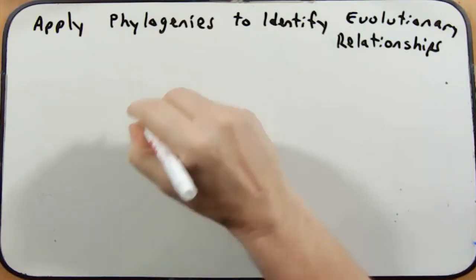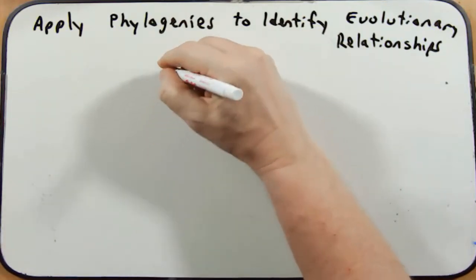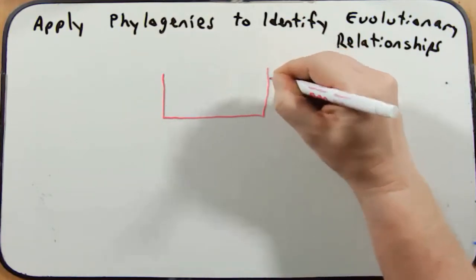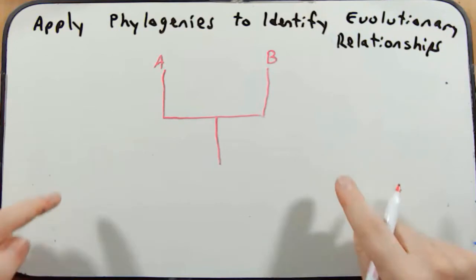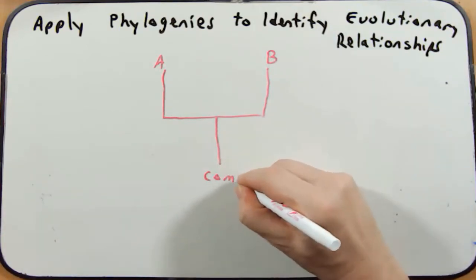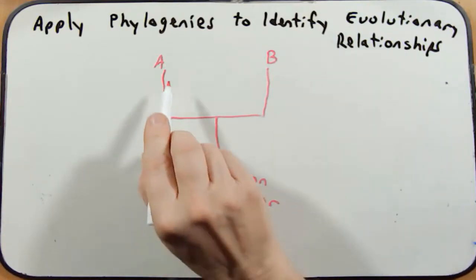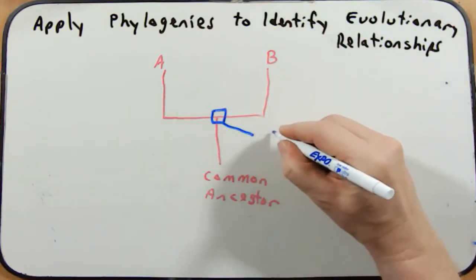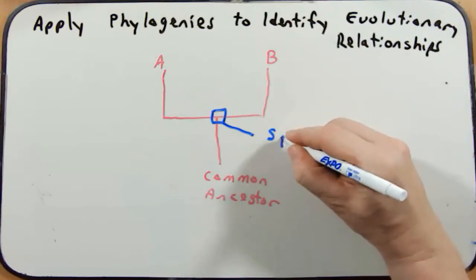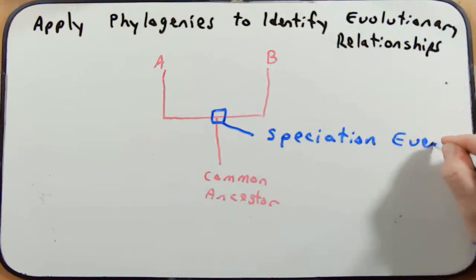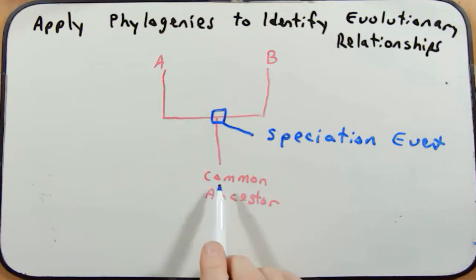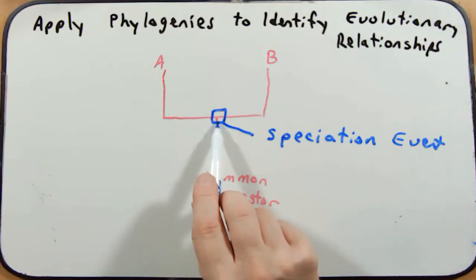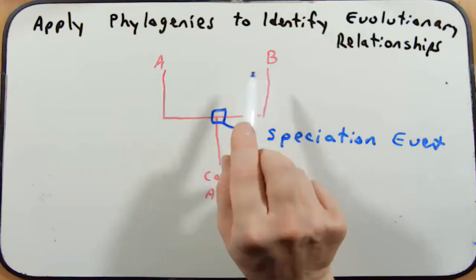One more point when applying phylogenies to identify evolutionary relationships: in this simple tree, the node represents a speciation event. It is at this point in evolutionary history that the common ancestor underwent a speciation event to ultimately give rise to taxon A and taxon B.